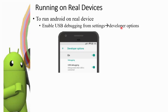In Settings, Developer Options may not be visible by default on many Android devices. On Android versions prior to 4.1, Developer Options may not be available. We need to manually enable Developer Options on the mobile device.